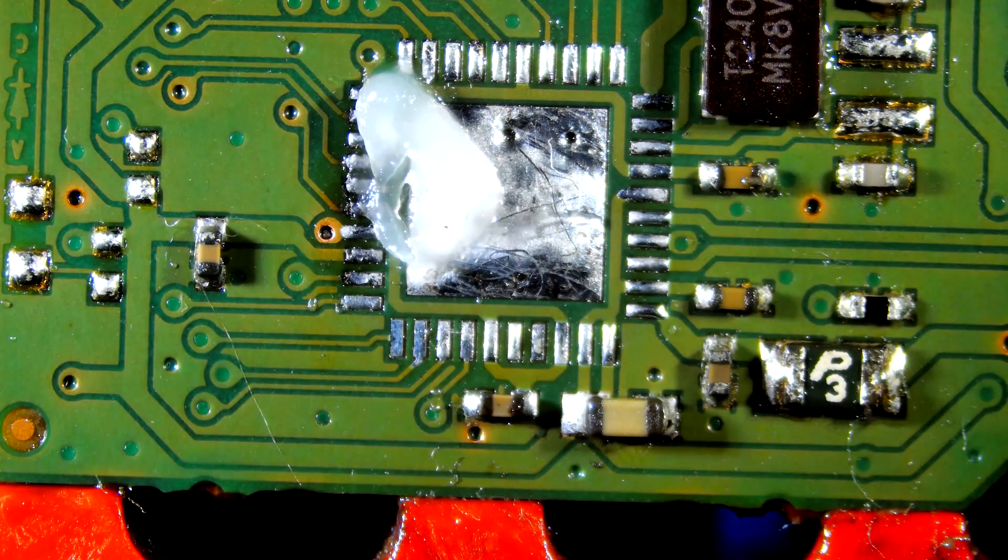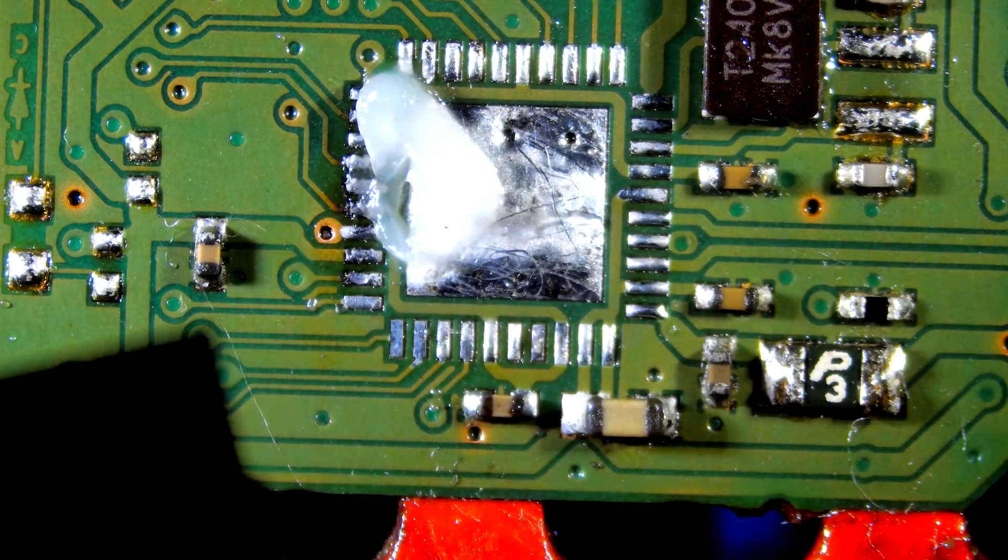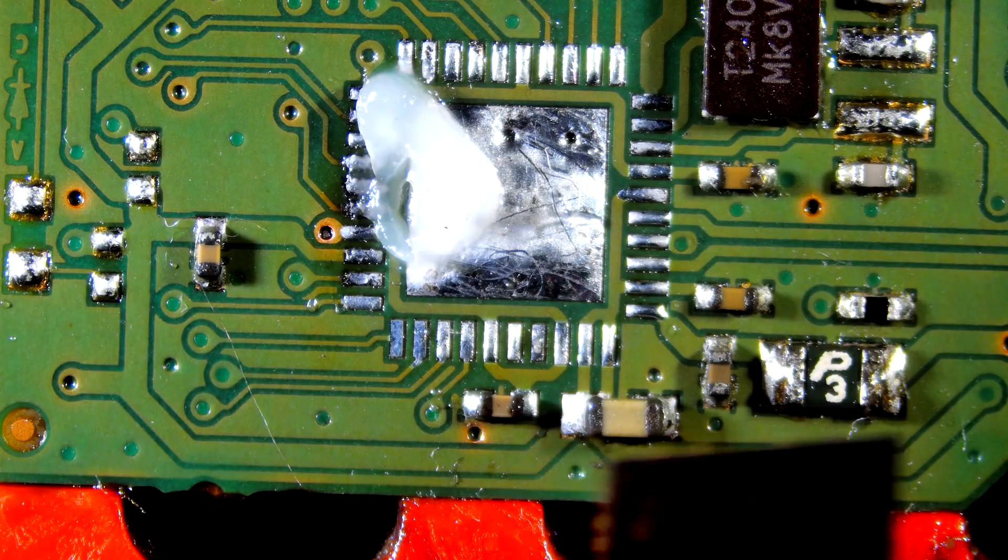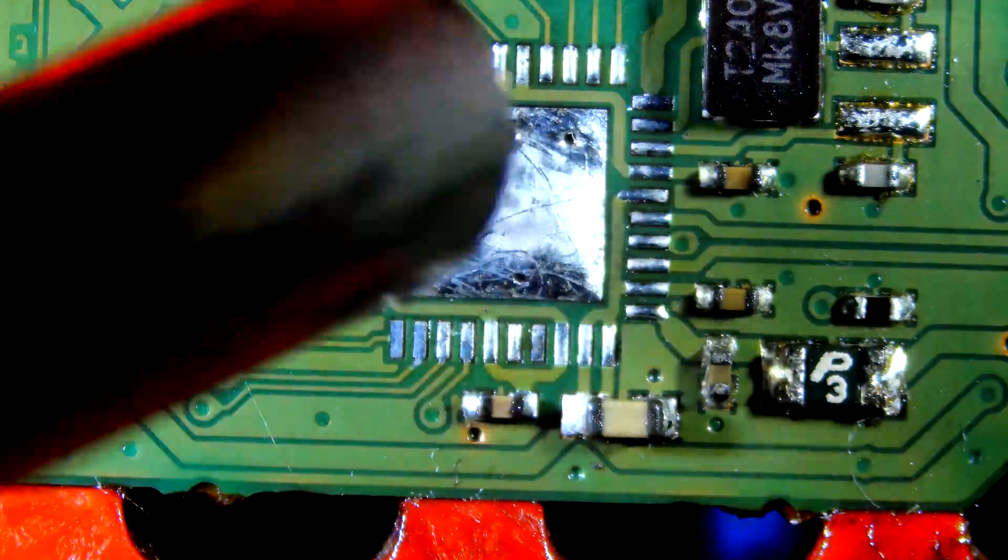Now let's re-solder the controller. Start by adding flux, then pre-heat the board. After that, place the controller on the board, aligning it properly.